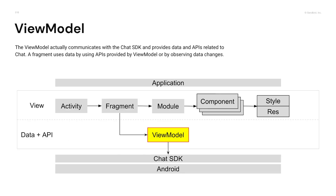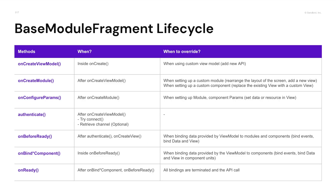Customization will be explored in more depth in the next section. Lastly, the ViewModel actually communicates with the Chat SDK and provides data and APIs related to chat. The fragment uses data by using APIs provided by ViewModel or by observing data changes. UIKit components are created in the lifecycle managed by BaseModelFragment and bind data and events.